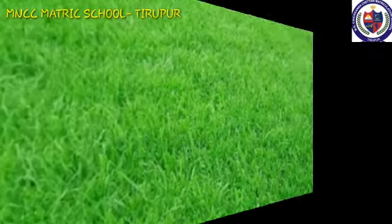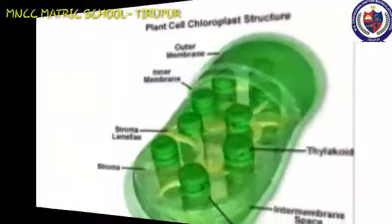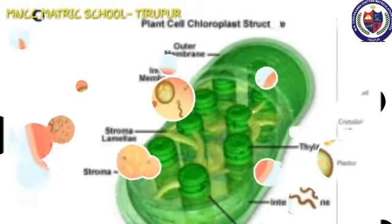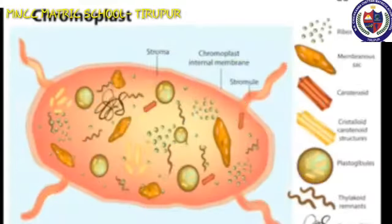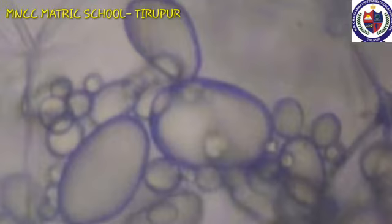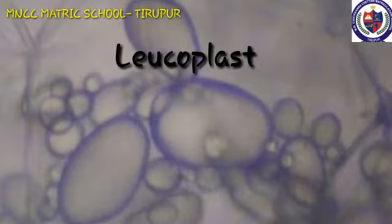Chloroplast: green coloured Plastids are present. Chromoplast: yellow, red, and orange coloured Plastids are present. Leucoplast: colourless Plastids.